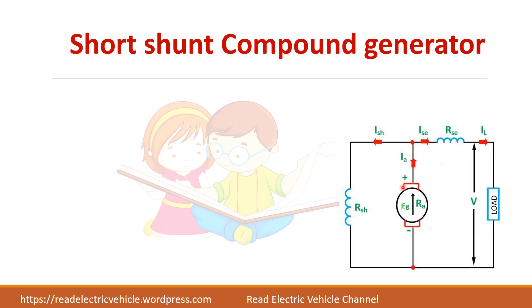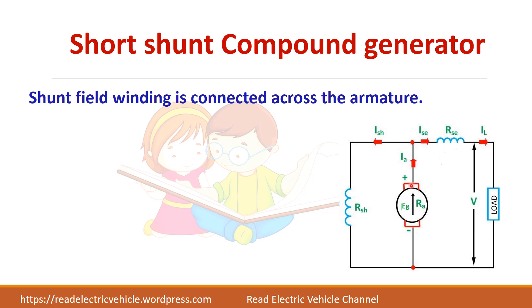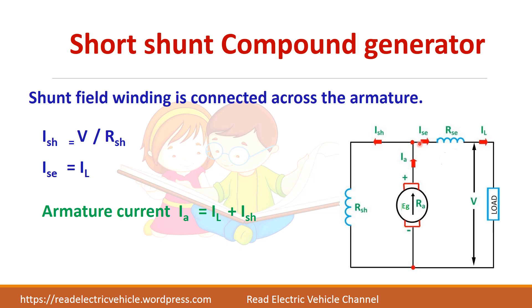In the short shunt compound generator, the shunt field is connected only across the armature, and the series winding is connected after that. Here the armature current is different from the series current. Ia = IL + I_sh, whereas the series current and load current remain the same because they are in series. The generated EMF is EG = V + Ia × Ra + IL × R_sc (or I_sc × R_sc for the series resistance drop).